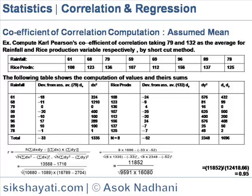Example: Compute the Karl Pearson coefficient of correlation, taking 79 and 132 as the assumed means for rainfall and rice production variables respectively, using the shortcut method.